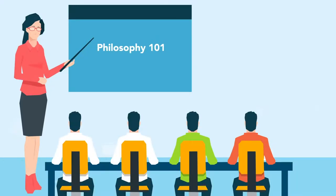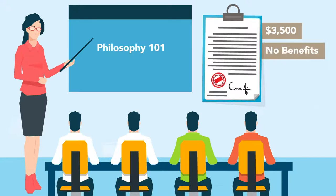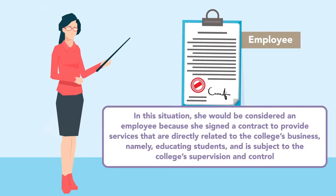Example 2: A community college hires an individual as an adjunct professor to teach Philosophy 101 to freshman students. She signs a contract requiring her to teach two days per week for the fall semester at a salary of $3,500 for the course. She receives no benefits, and renewal of the contract is subject to satisfactory review by the chairperson of the philosophy department. In this situation, she would be considered an employee because she signed a contract to provide services directly related to the college's business — namely educating students — and is subject to the college's supervision and control.